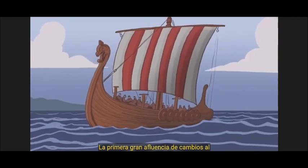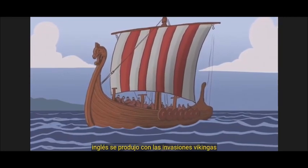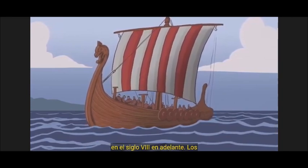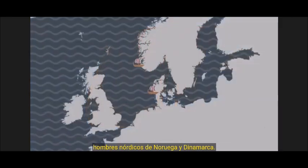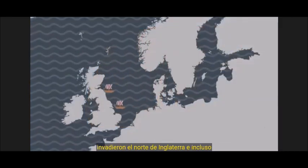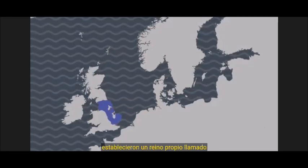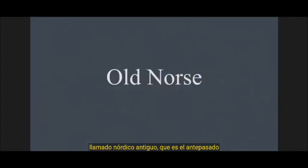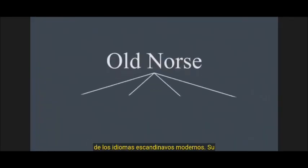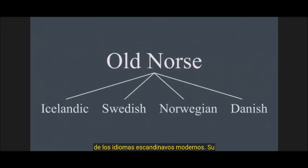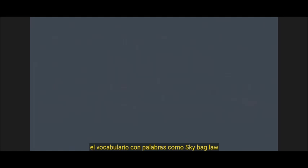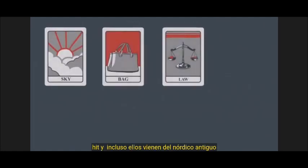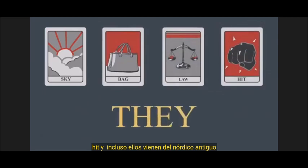The first major influx of change to English came with the Viking invasions in the 8th century onward. Norsemen from Norway and Denmark invaded the north of England and even set up a kingdom of their own, called the Danelaw. These Vikings spoke a language called Old Norse, which is the ancestor of the modern Scandinavian languages. Its influence on English was mostly vocabulary, with words like sky, bag, law, hit, and even they coming from Old Norse.